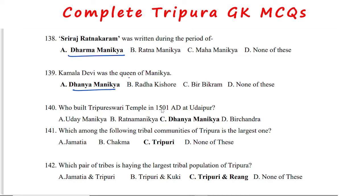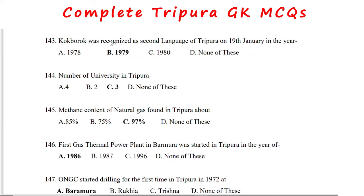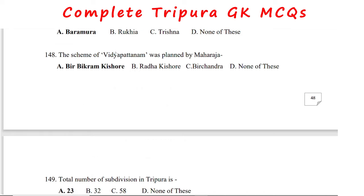The Tripurishri temple was built in 1501 AD at Udaipur by Maharaja Dhanamanika. The largest tribal community in Tripura is the Tripuri. The pair of tribes with the largest tribal population is Tripuri and Riyang. Khokhborok was recognized as the second language of Tripura on 19th January 1979. ONGC started drilling for the first time in Tripura in 1972 at Baramura. The Patanam scheme was planned by Maharaja Birbikram Kishore Manika.